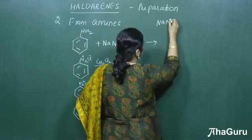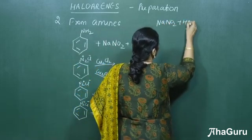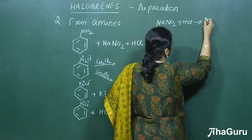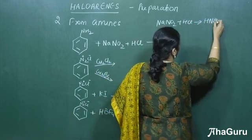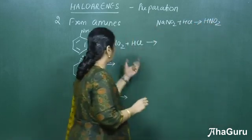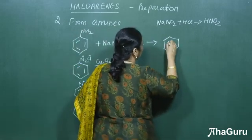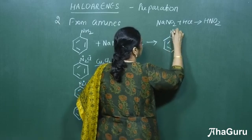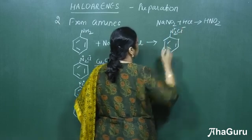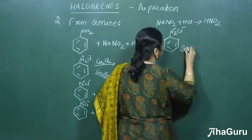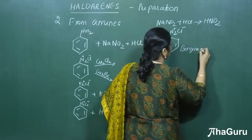We get NaNO2 plus HCl will give you nitrous acid, that is HNO2. This is prepared in situ here. Here we will get diazonium chloride salt, that is N2+ Cl-. This is called benzene diazonium chloride.